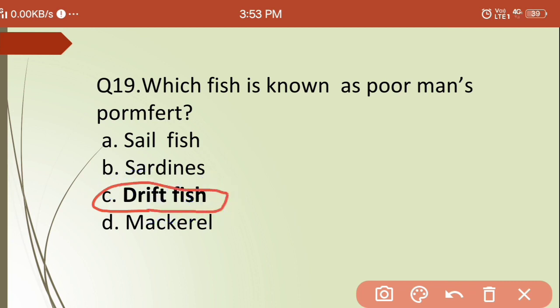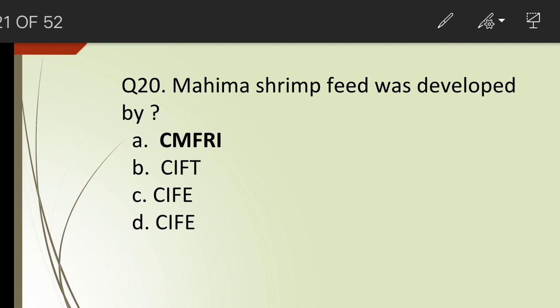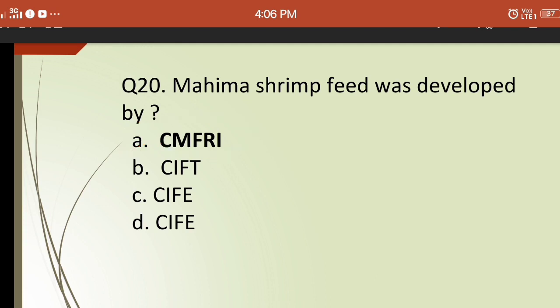Twentieth question: Mahima shrimp feed was developed by which institute? Options are: (a) CMFRI, (b) CIFT, (c) CIFE, (d) CIFRI. The correct answer is (a) CMFRI — the Central Marine Fisheries Research Institute developed the shrimp feed called Mahima.